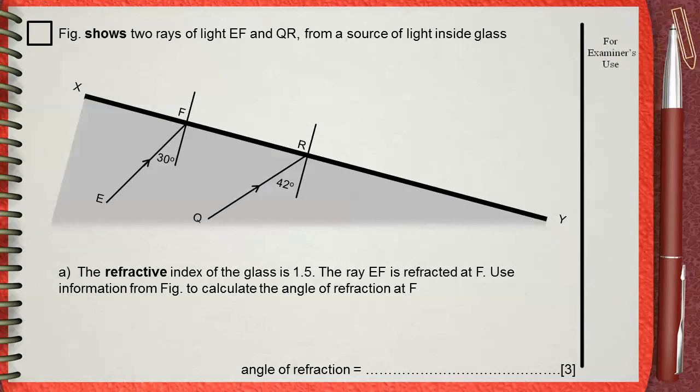Figure shows two rays of light EF and QR from a source of light inside glass. The refractive index of the glass is 1.5. The ray EF is refracted at F. Use information from figure to calculate the angle of refraction at F.